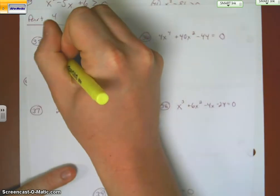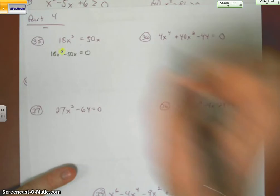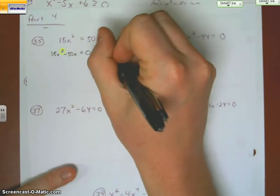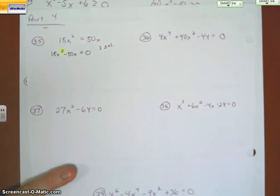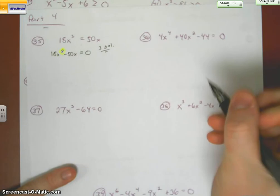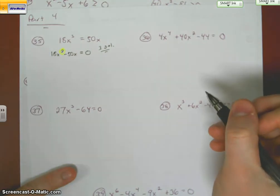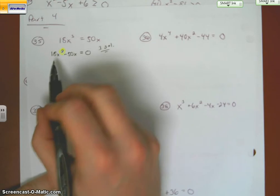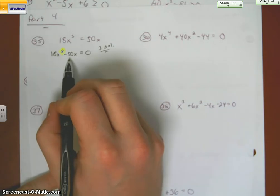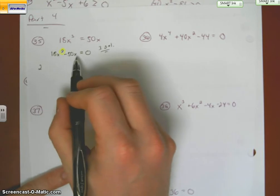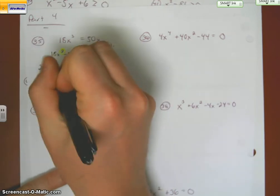So once we set equal to zero, we're going to look at the highest degree, which in this case is three. So we are looking for three solutions. Our first thing that we want to do when we factor is take out a GCF. Well, 18 and 50, I have a GCF of 2, and then they both have an x, so 2x.